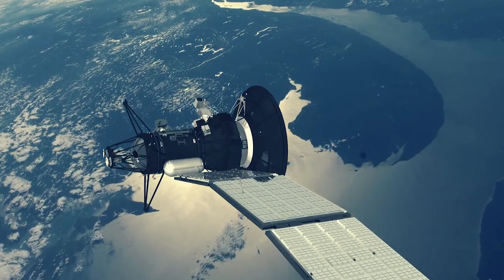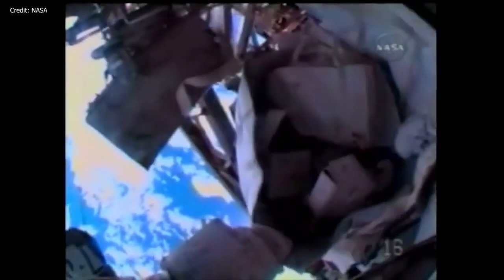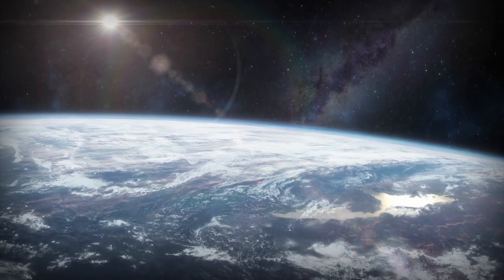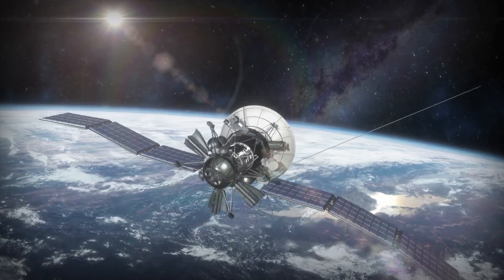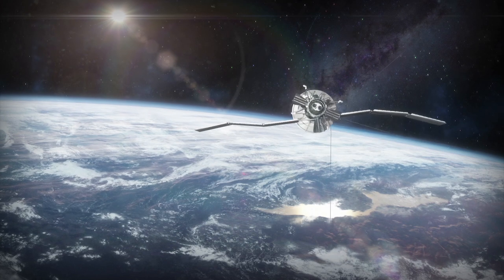There are about 22,000 spent rocket stages, dead or dying satellites, and countless fragments of human-made garbage around Earth, all traveling at speeds up to 28,000 kilometers per hour. That's about seven times faster than a bullet.